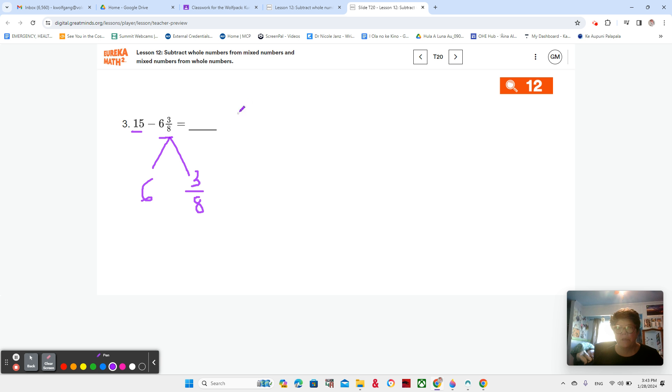Now we can do 15 minus 6 and take care of our whole numbers, right? I have 15 pizzas. I'm giving away 6 and 3 eighths pizzas. 15 minus 6 is 9. Now I still have to give away the 3 eighths. So I'm going to do 9 minus 3 eighths. Okay?